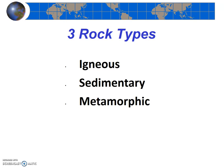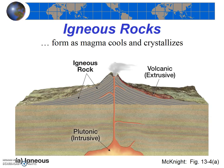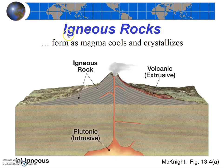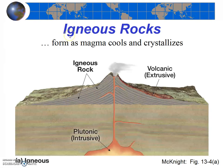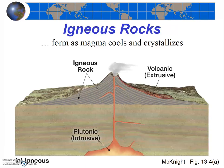First, let's study igneous rocks. Igneous rocks form by the cooling and crystallization of magma. Look at the word igneous and note that it has the same prefix as ignite or ignition — so think of fire, volcanic fire, volcanoes and magma. These rocks more or less come from fire, from molten rock, from magma. Igneous rocks form as magma cools and crystallizes.